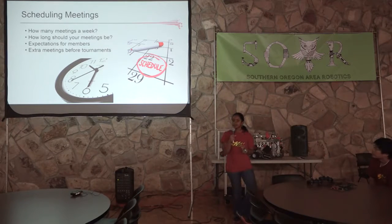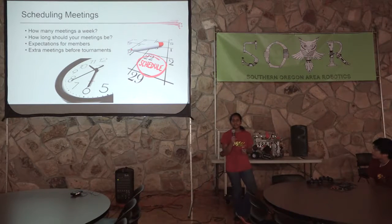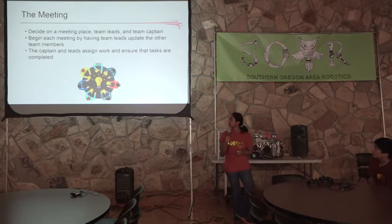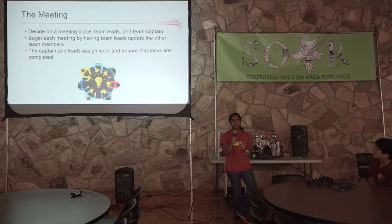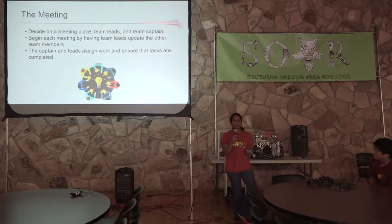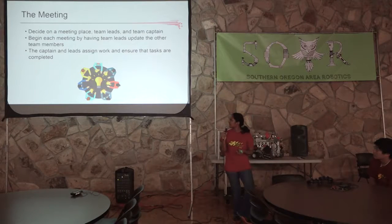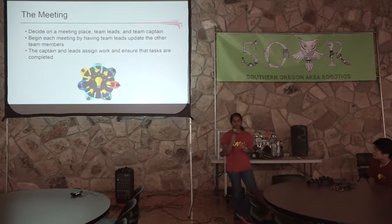There's also the aspect of expectations for members. We expect our members to come to three out of four meetings a week, though this depends on your team's size and what work members are doing. For meeting place, you need space for the entire FTC playing field, your tools, your parts, and space for everyone to work. The team captain and team leads can be chosen based on interest and experience, and they'll be assigning work and making sure everyone meets their deadlines.